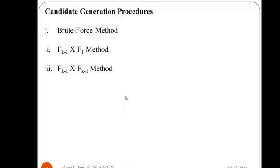Now let us go into the different candidate generation procedures. Three procedures are given: the brute force method, the F(k-1) × F(1) method, and the F(k-1) × F(k-1) method. These candidate generation procedures are very important from the exam point of view and are very relevant for frequent item set generation in the Apriori algorithm. We will go through them one by one.